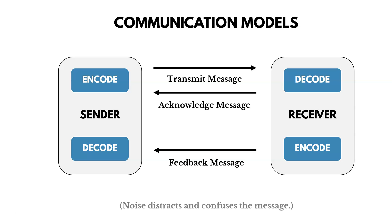The receiver may also send a feedback message. They decode the message from the sender, send an acknowledgement, and then encode a feedback message. The acknowledgement might be 'okay, I understand what you're saying,' and the feedback may be 'but I'm going to have to disagree, and here's why.' So the sender encodes and transmits an initial message, the receiver decodes and acknowledges it, and then the receiver encodes a feedback message which the sender decodes. That's how communication can be modeled.